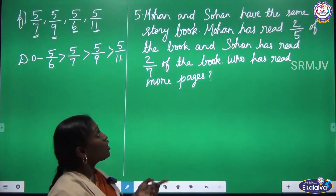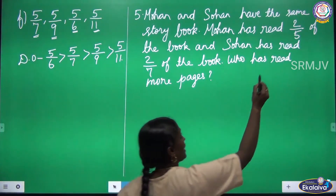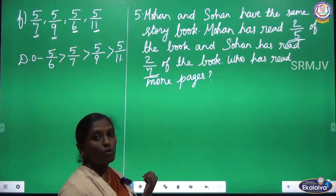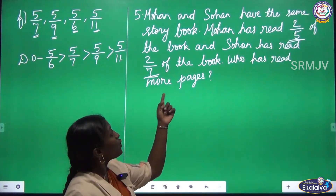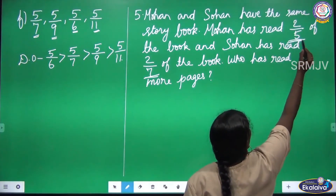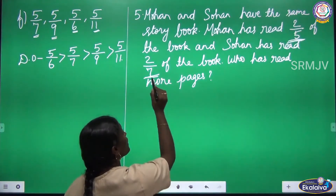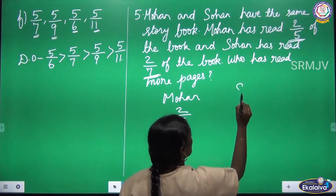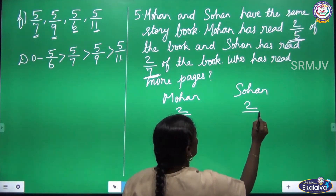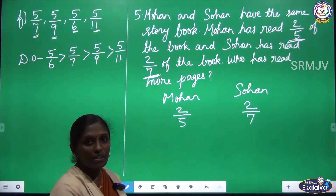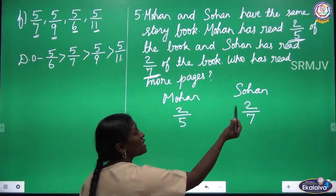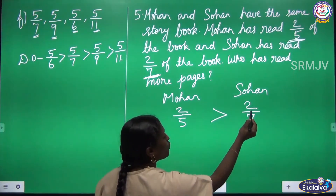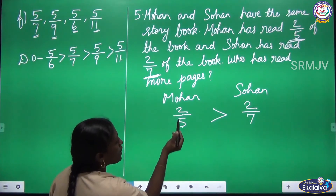Is it clear? The next question: Mohan and Sohan have the same storybook. Mohan has read 2 by 5 of the storybook and Sohan has read 2 by 7. Who has read more pages? These two fractions are unlike fractions with the same numerator. The fraction with the greater denominator is smaller, so 2/7 is smaller than 2/5. Therefore, Mohan has read more pages.